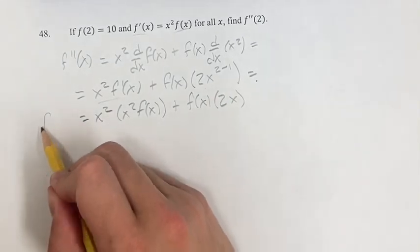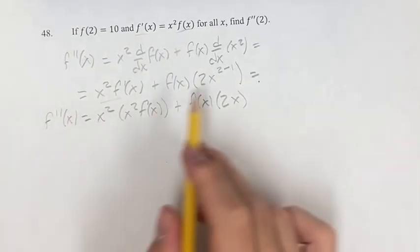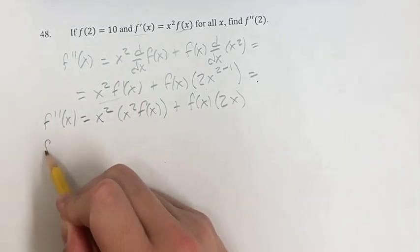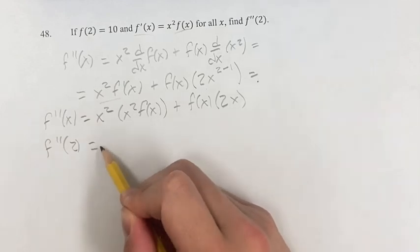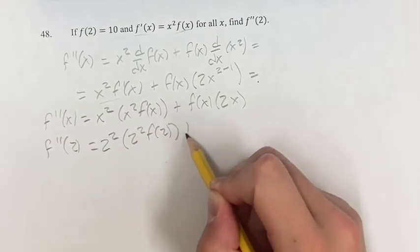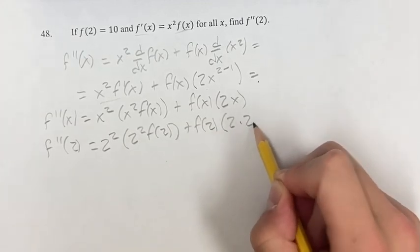Now, this is the second derivative of f in terms of f and x, and what we have to do from here is plug in 2. So f''(2) = 2² times 2²f(2), plus f(2) times 2 times 2.